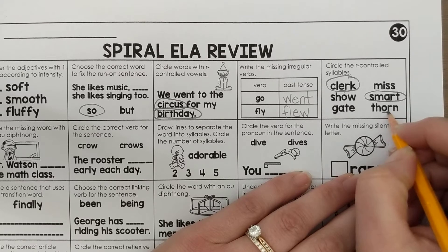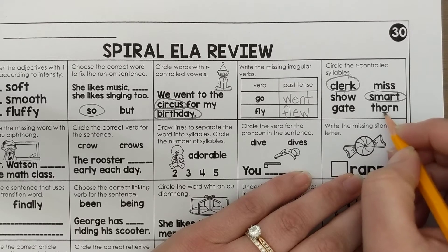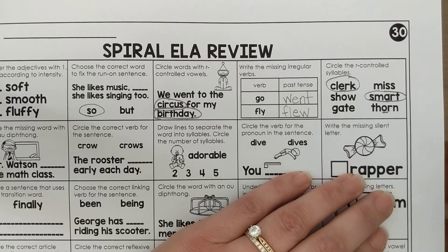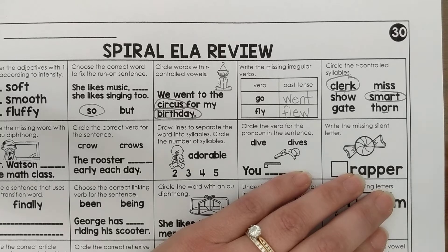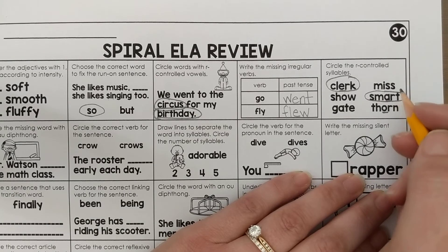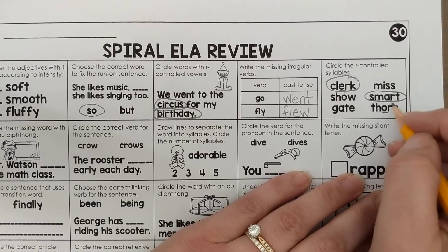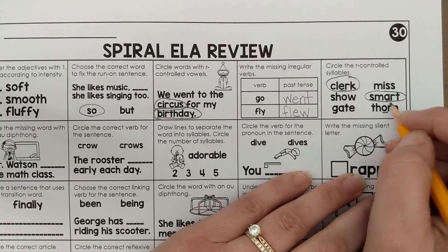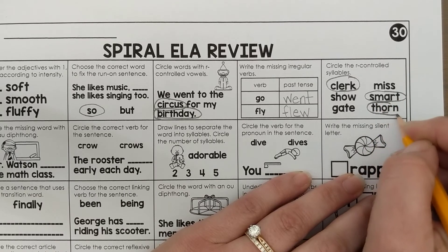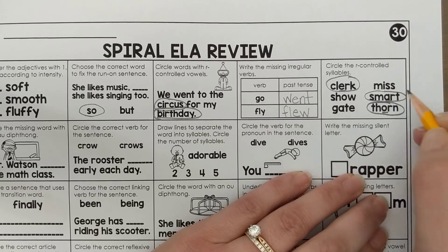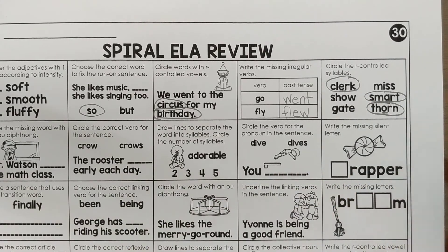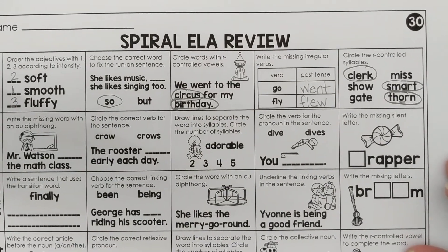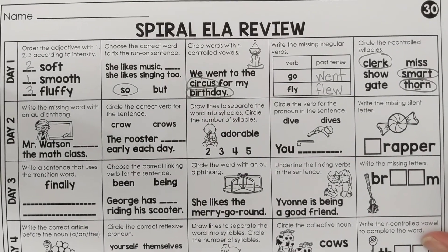'Thorn' — again, the R is next to a vowel. Instead of short O or long O, it is now 'thorn,' or 'or.' R's next to vowels change the sound of that vowel.